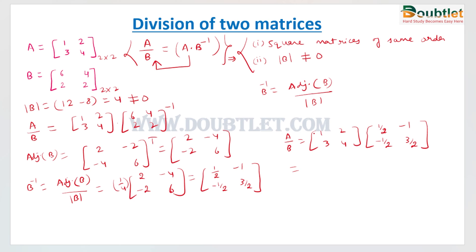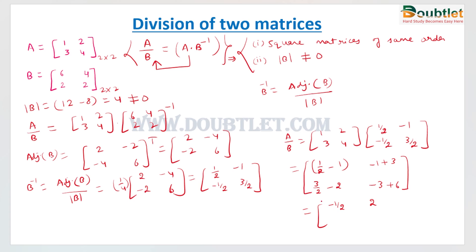Performing the matrix multiplication by taking each row and column: first row, first column gives 1/2 × 2 minus 1, which equals minus 1/2. First row, second column gives minus 1 plus 3, which equals minus 1/2. Second row, first column gives 3/2 minus 2. Second row, second column gives minus 3 plus 6 equals 3. So the final answer of A ÷ B is the matrix [−1/2, −1/2; ..., 3].